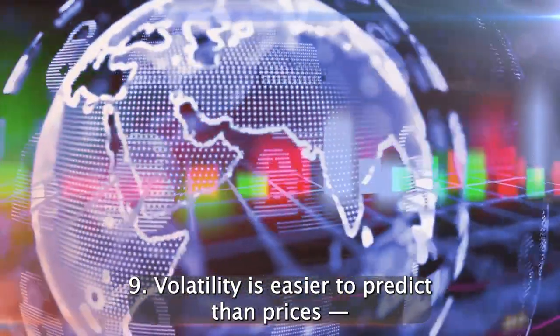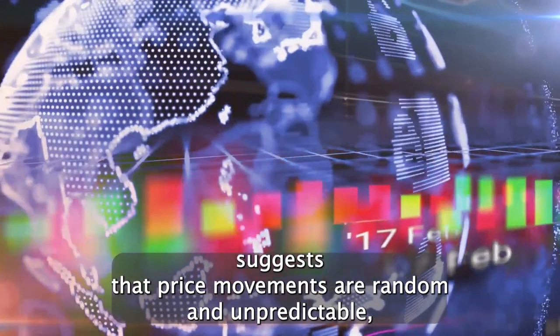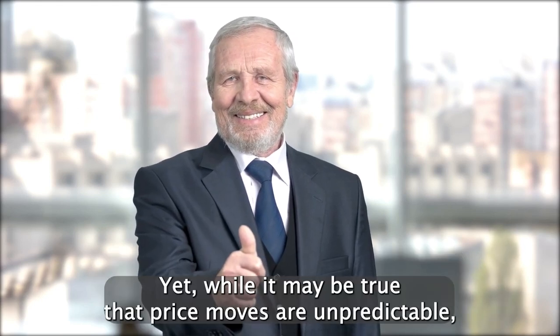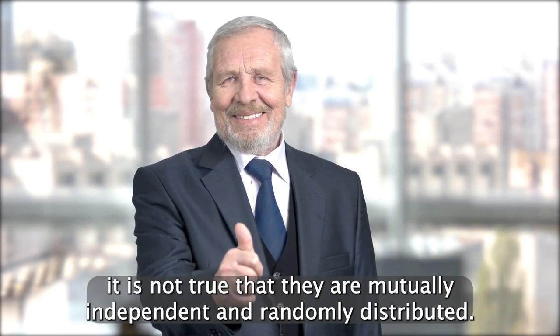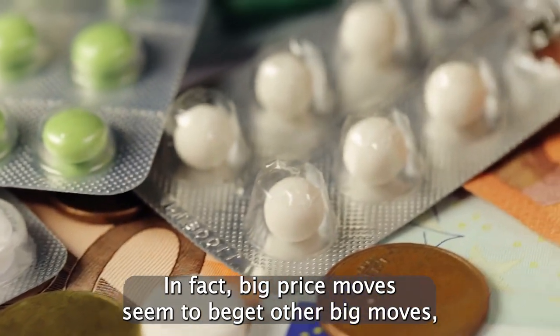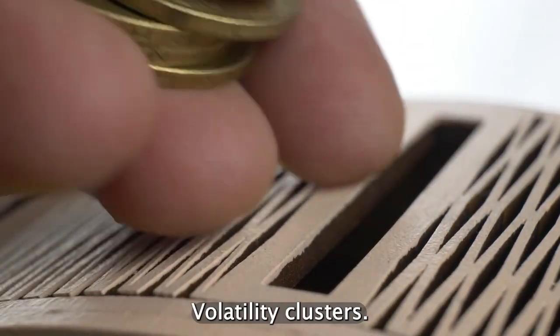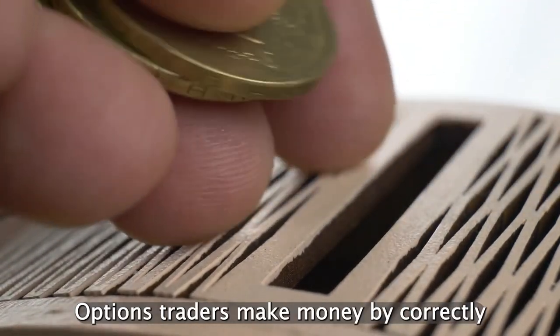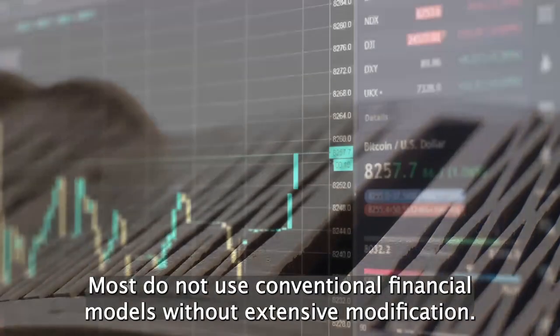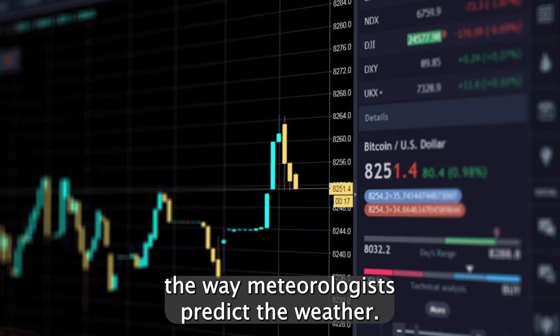Nine: Volatility is easier to predict than prices. Conventional financial theory suggests that price movements are random and unpredictable, independent of each other, and distributed in a normal bell-shaped curve. Yet, while it may be true that price moves are unpredictable, it is not true that they are mutually independent and randomly distributed. In fact, big price moves seem to beget other big moves, and little moves to beget other little moves. Volatility clusters. Options traders make money by correctly predicting and protecting against volatility. Most do not use conventional financial models without extensive modification. Efforts are underway to forecast volatility the way meteorologists predict the weather.